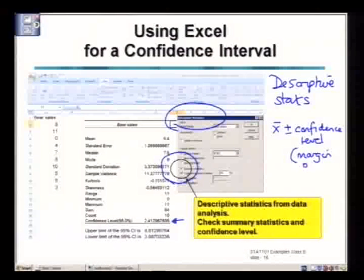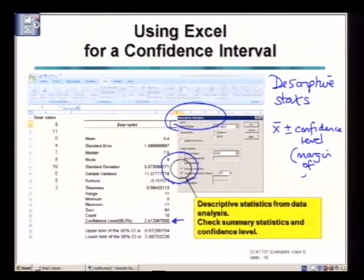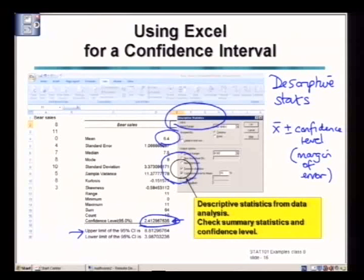Now in order to get a confidence interval from Excel, all you have to do is add the mean to the confidence level to get the upper limit, and mean minus the confidence level will give you the lower limit of the confidence interval.